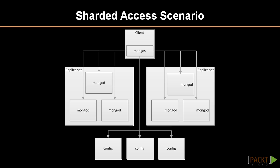In a sharded scenario, several aspects of a deployment change. Most notably, the client no longer communicates with the MongoDB instances directly. Instead, a new component called MongoS is introduced. After data has been sharded — that is, partitioned — the client doesn't know on which replica set a given piece of data is stored. The MongoS instance is designed to route queries to the appropriate MongoDB processes.